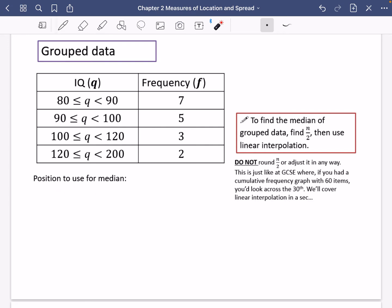To find the position for the median, we need to think about how many things there are. And it says to find the median of the grouped data, find n divided by two, and then use linear interpolation. I have said here, do not round n over two or adjust it in any way.